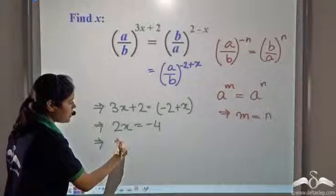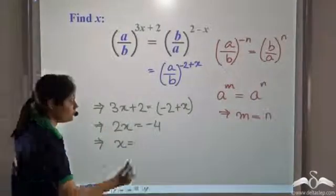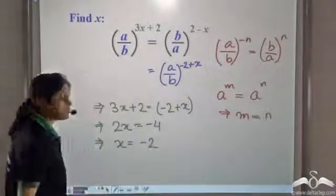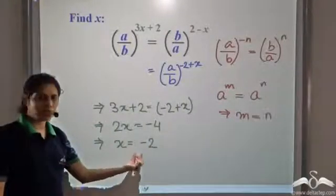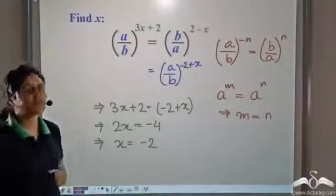This implies x is equal to negative 4 divided by 2 that is negative 2. So we get x is equal to negative 2. This is the solution of this equation.